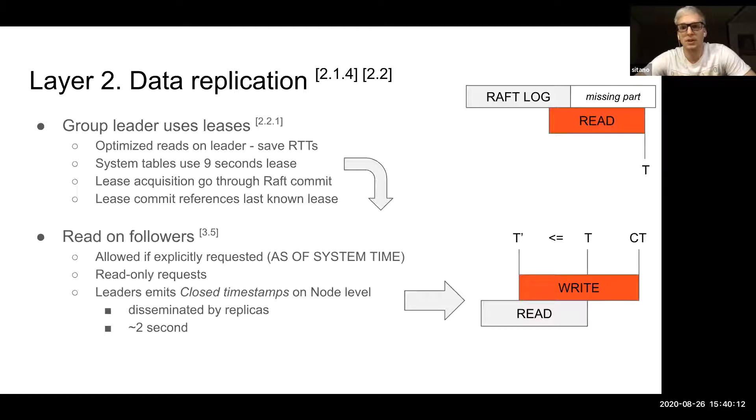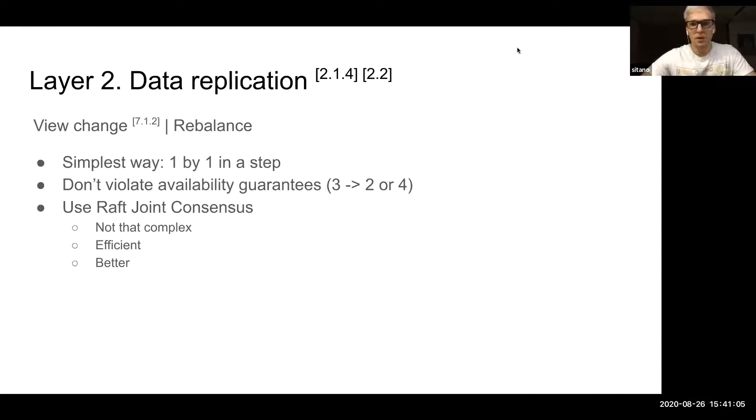Reads also can be served from the followers if it's explicitly stated with an AS OF SYSTEM TIME statement. To make sure that those reads performed at the followers are consistent, CockroachDB uses dissemination of the timestamps that depicts the safe points in time behind which we can do safe reads, and they also verify that the replicas have consumed enough raft log prefix to serve the read from the replica.